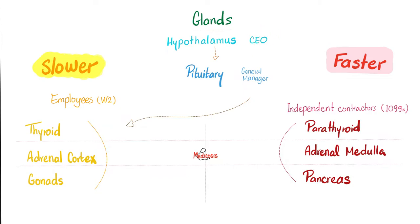Who is the CEO of the endocrine system? The hypothalamus. Who is the general manager, under the CEO? The pituitary. There are three glands that listen to and obey the pituitary — the employees: thyroid gland, adrenal cortex, and gonads. Their hormones are mostly lipid-soluble, i.e., slow in action. However, there are three independent contractors that do not care about the pituitary: the parathyroid glands, adrenal medulla, and endocrine pancreas. These hormones are fast.